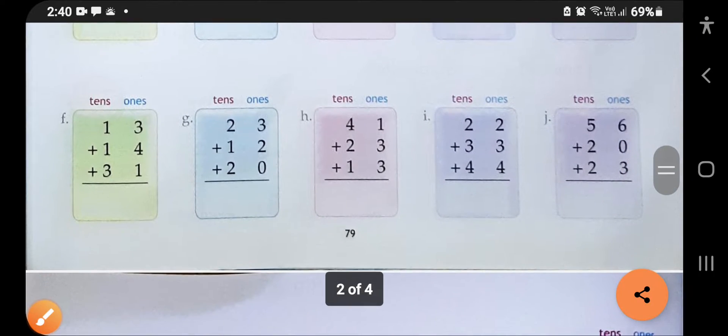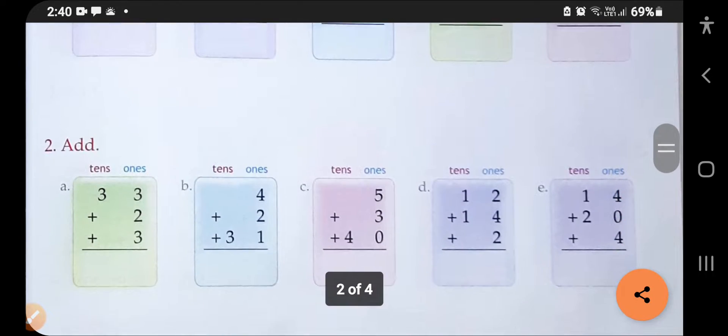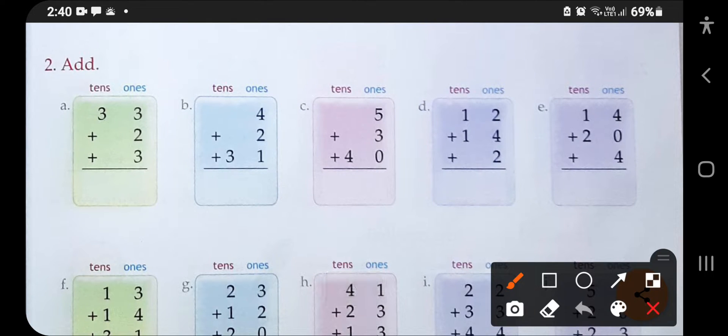This is Class 1 Junior Math Space number 79, question number 2. In this question, you have to add the numbers. This is the same as the first question. You have to do the same thing in this question also. For this, you have to add 3, 2, and 3. You can draw lines one by one for the given number digits.